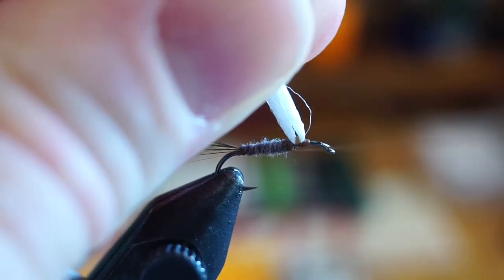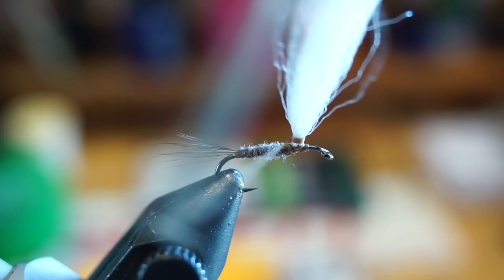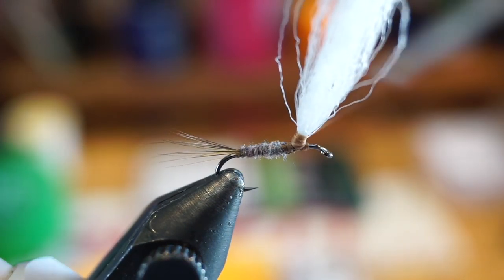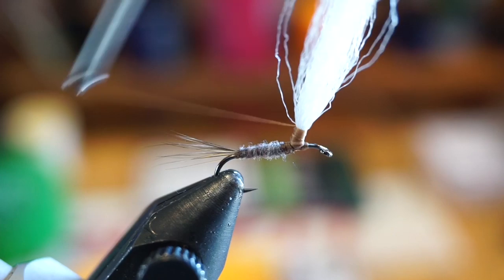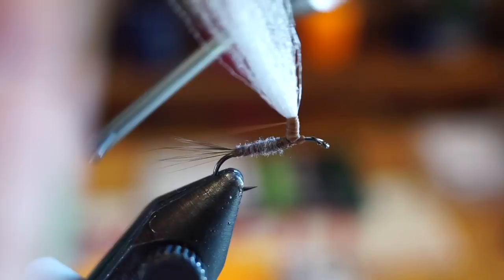Then pull the post upward and start making posting wraps up the material. Now this can be tricky if you haven't done it before, but it's all about how much tension you put on your thread. Just keep practicing and it will start to become easier. Tie a fair ways up the post, maybe about a hook gap or slightly less. Then come back down and tie the post in tight with a few wraps in front and behind.